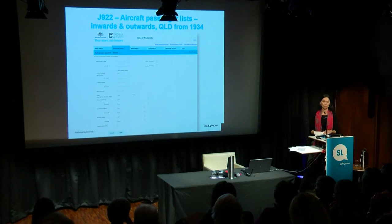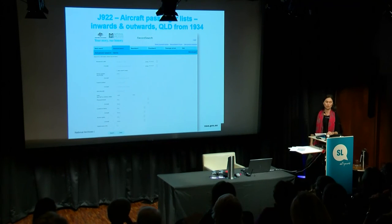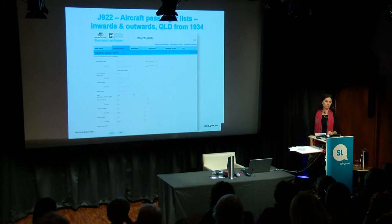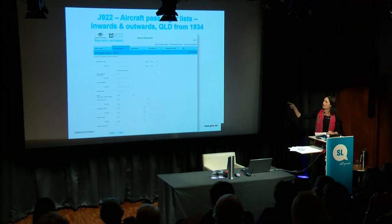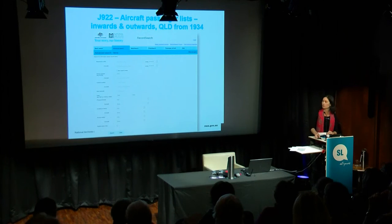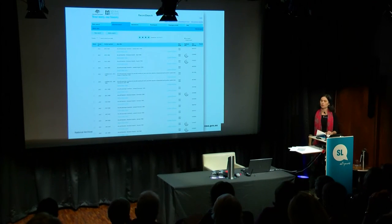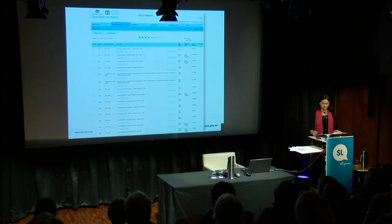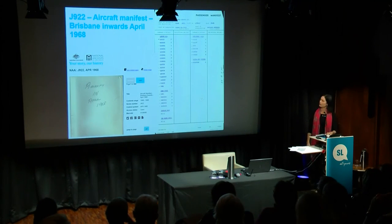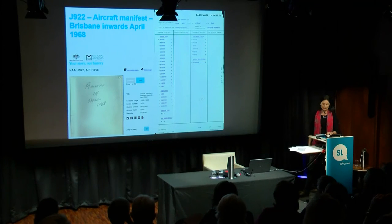The National Archives also holds aircraft passenger arrivals. In Brisbane, the main series is J922 and this starts at 1934. There are about 700 aircraft lists in this series and at the moment almost 200 are digitised. I've just entered the series and I'm searching for 1968 aircraft arrivals — I got 27 results for aircraft arriving and departing in 1968. Some are digitised and some are not. If it's not digitised, you can order online to have it digitised or come into our Brisbane office and view the original in the reading room. These are fairly large files — this one is 280 pages. The information contained within is not extensive and often will only include just a surname, but we do use these regularly for people who need proof of arrival into Australia.